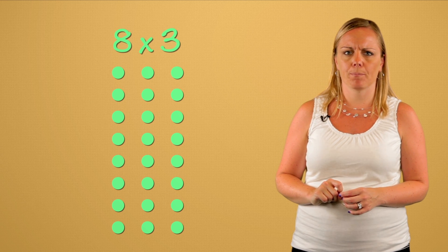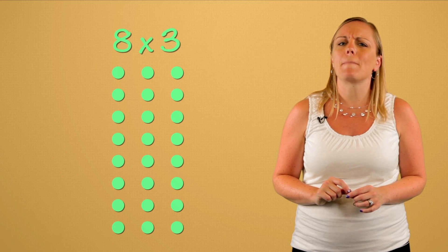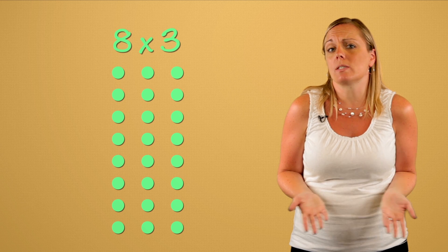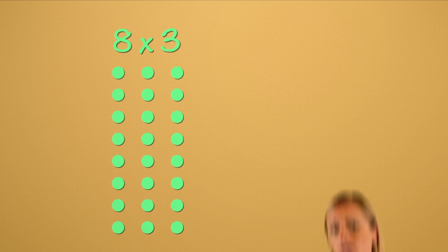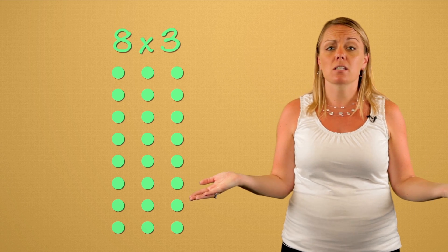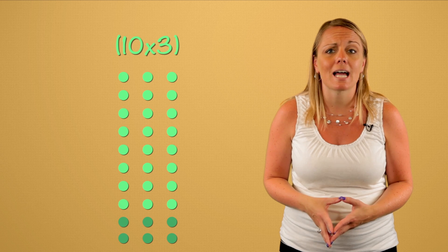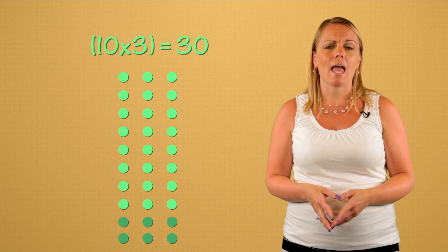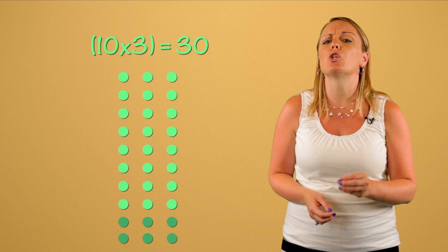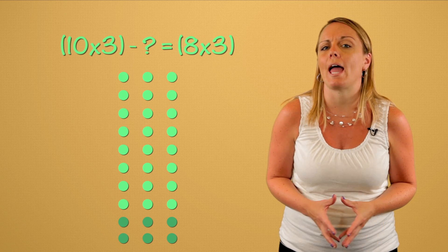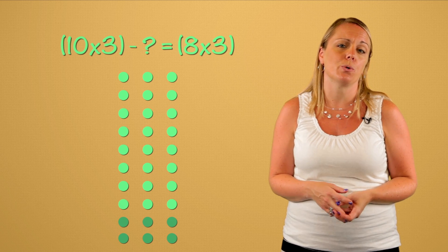Eight times three. What is a good basic fact we can use to help us solve this? Eight times three is close to ten times three. And we already know ten times three is thirty.